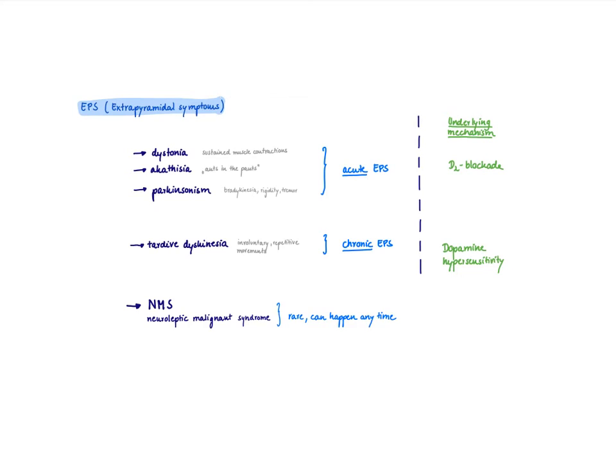Why everybody's very worried about tardive dyskinesia is that you can basically not do anything about it. It might be even irreversible. So the underlying mechanism is different to the acute EPS because it turns out that this tardive dyskinesia is probably due to dopamine hypersensitivity. So that means if you have blocked all these dopamine receptors for such a long time, the remainder ones are so super sensitive and they are going to make these problems. So therefore, it's not going to help you to give an antimuscarinic. It's not going to help you to lower the dose. It would make it even worse.